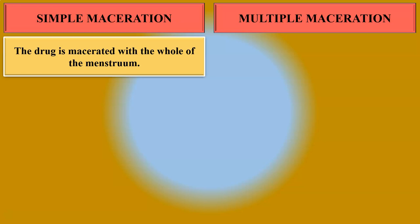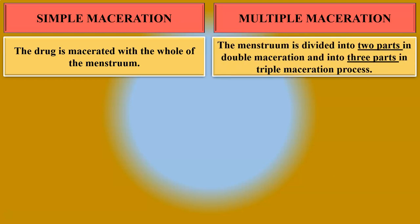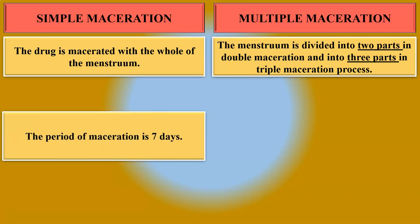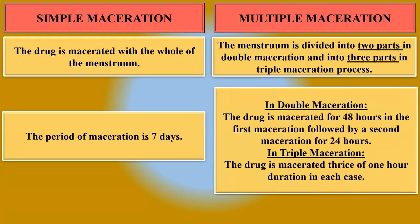Next is the difference between simple maceration and multiple maceration. In simple maceration, the drug is macerated with the whole of the menstruum, whereas in multiple maceration, the menstruum is divided into two parts in double maceration and three parts in triple maceration. In simple maceration, the period of maceration is seven days. In double maceration, the drug is macerated for 48 hours in the first maceration followed by a second maceration for 24 hours. In triple maceration, the drug is macerated thrice, each maceration of one hour duration.